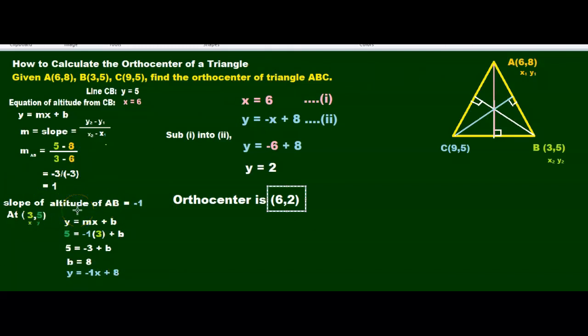Plug those back in as we did for the slope of altitude of AB as shown here. Find the equation of each of the altitudes, and then find the point of intersection simultaneously. And then, your final X and your final Y would be the orthocenter.